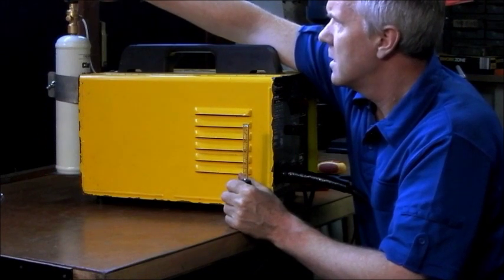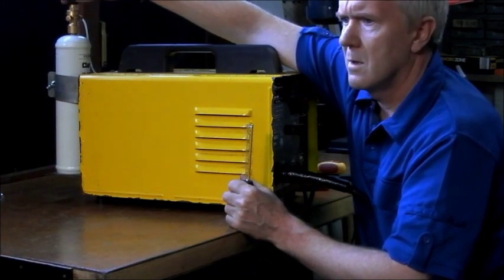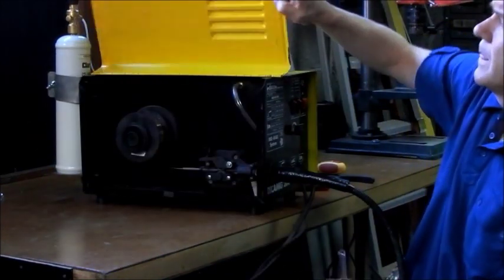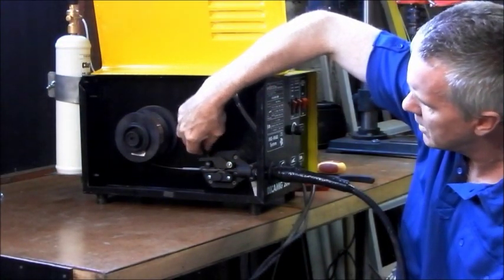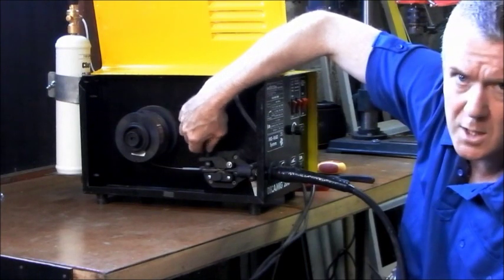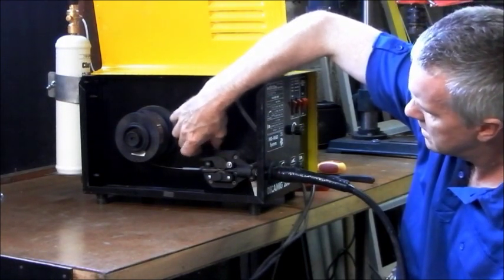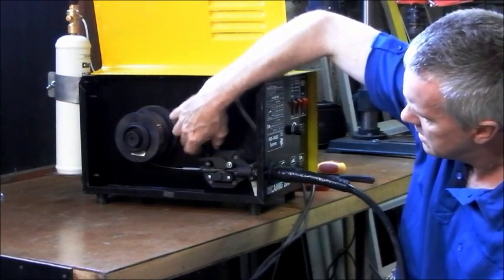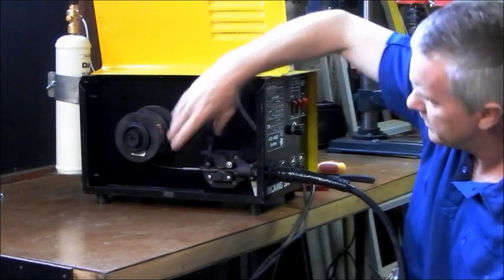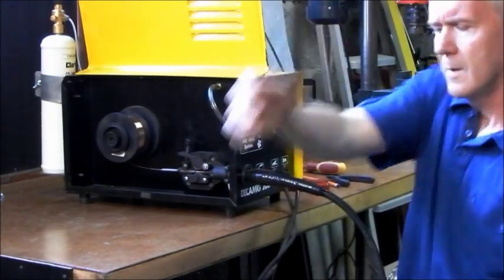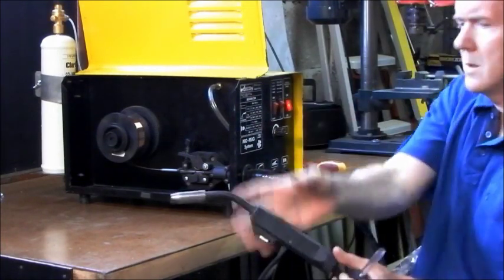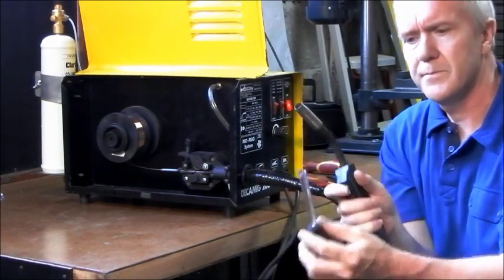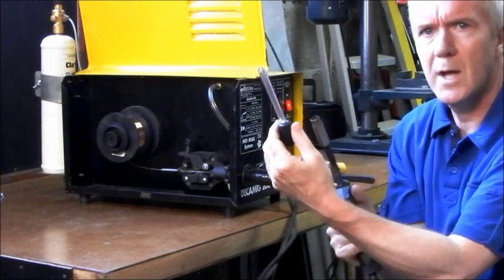Turn the gas on before. Undo the wire feed, so the wire will not be feeding through it when you pull the trigger. Now, get the gun, switch it on, place the flow meter over the end of the gun.